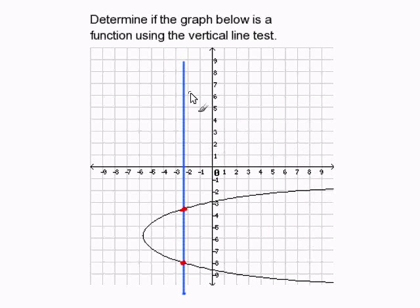Now this means that for the input, we're getting two outputs right here. And this cannot be a function. So therefore, this graph is not a function and our answer is false.